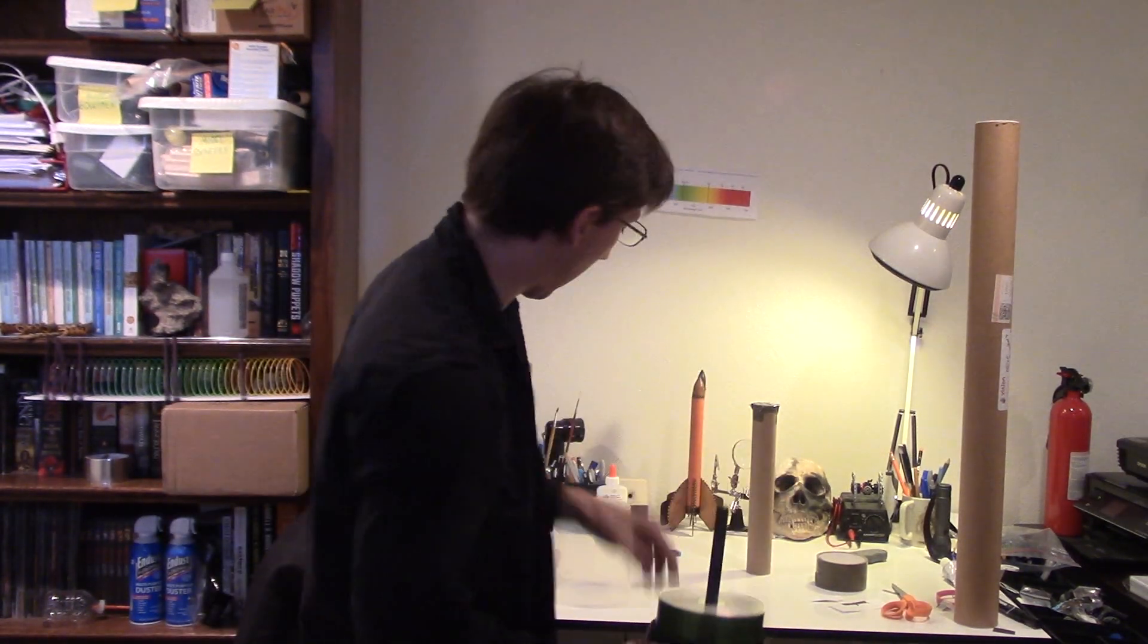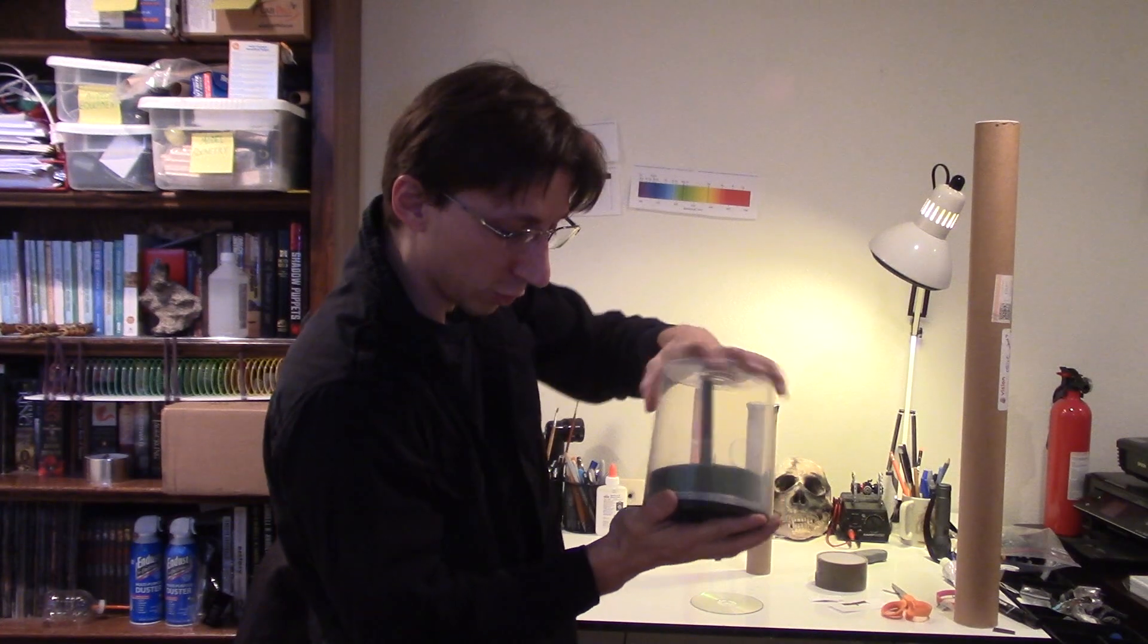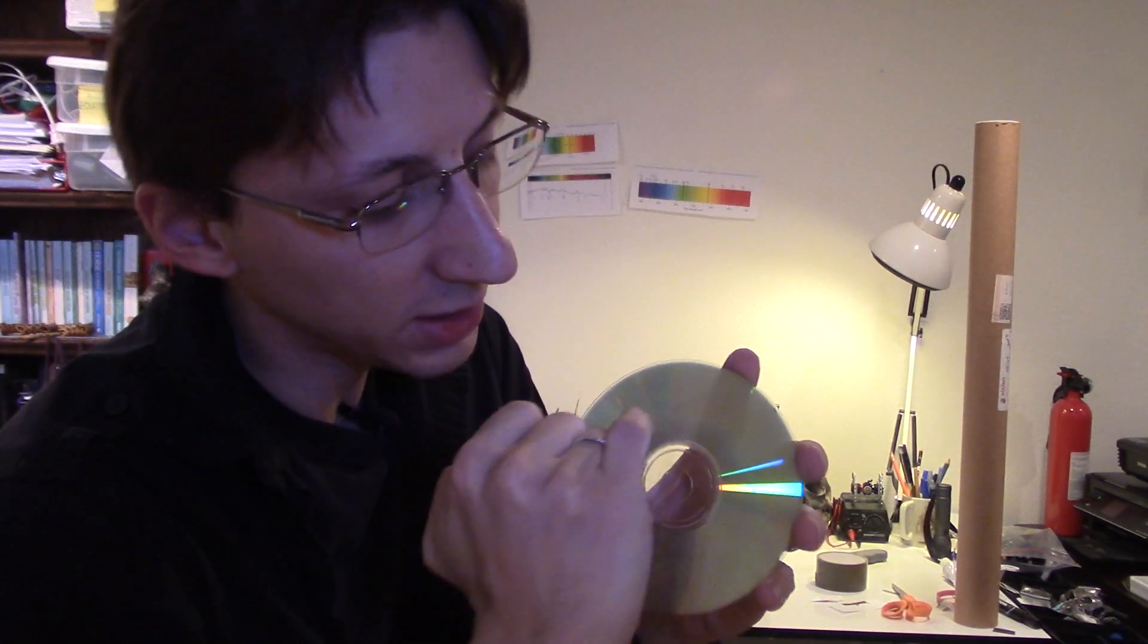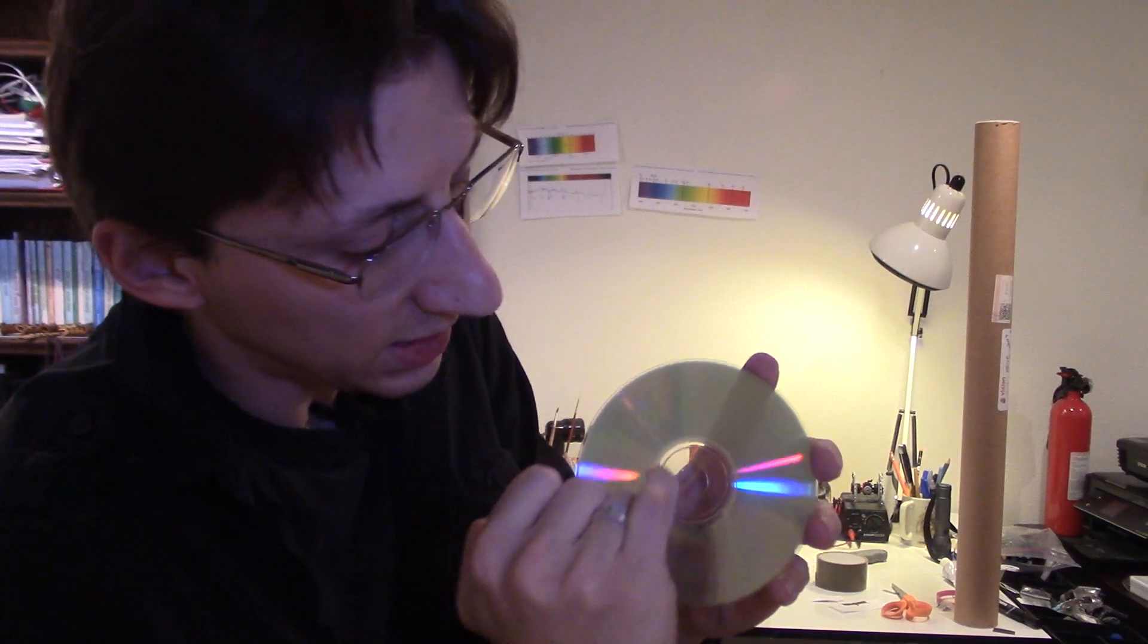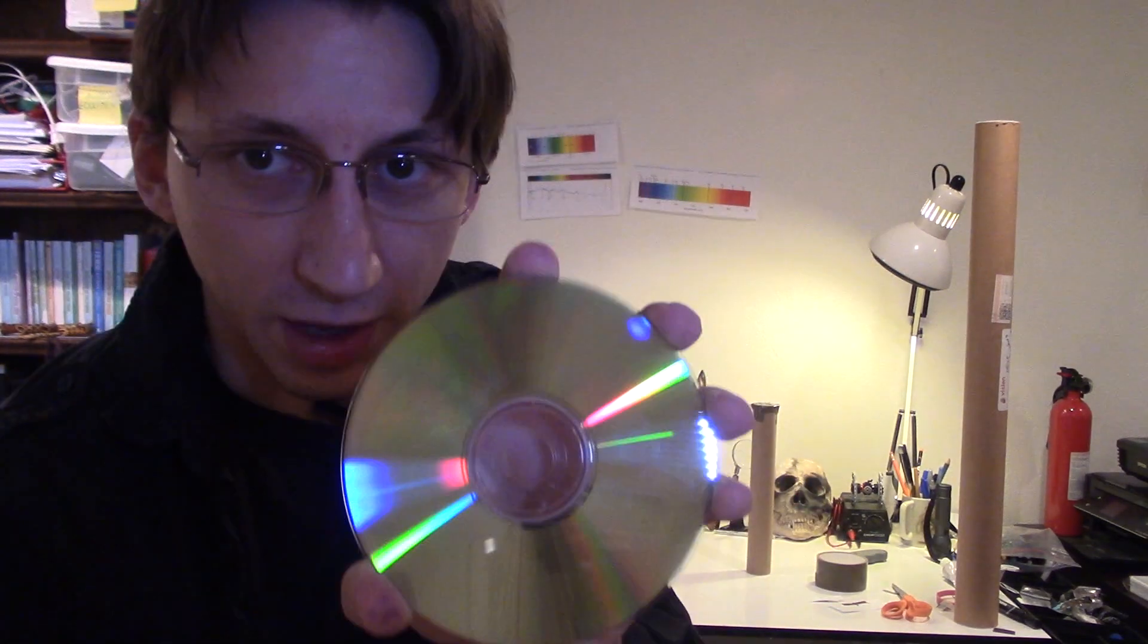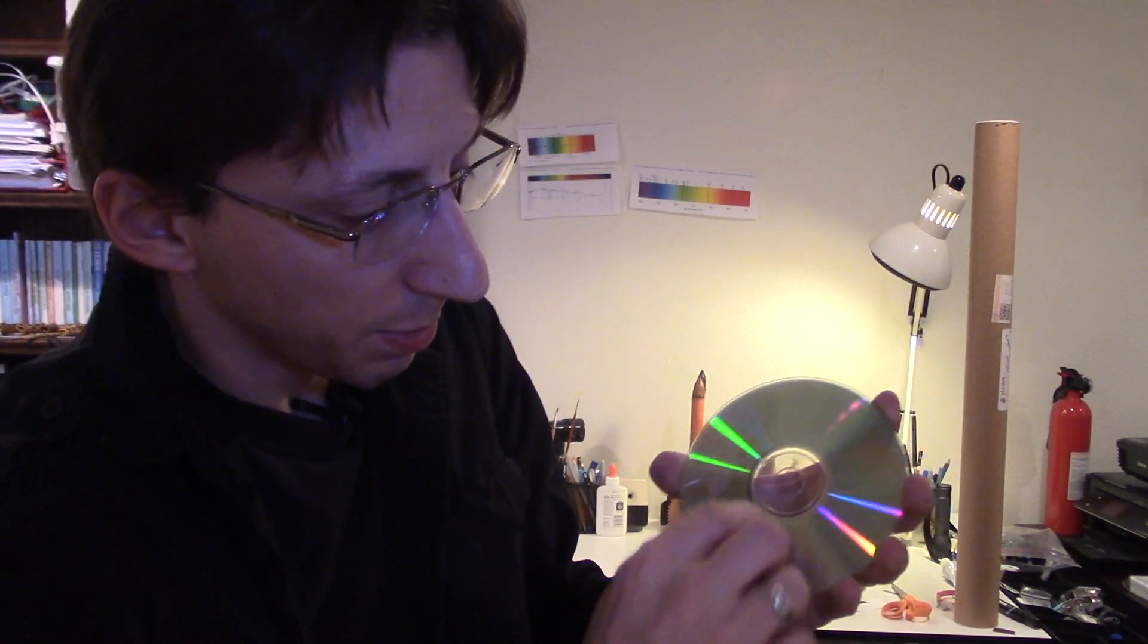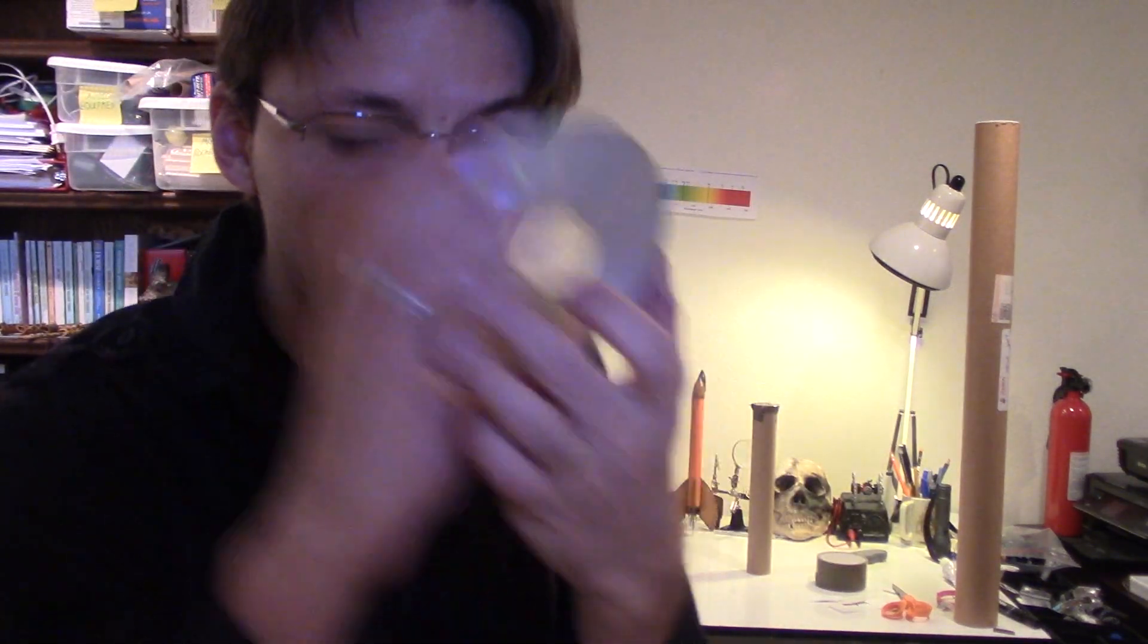I have plenty of these laying around from back when we used to store stuff on CDs. The way that the data was encoded on here meant that there are lots and lots of tiny bumps and ridges, pits and lands, in the CD itself. And you can already see the bright rainbow colors come from the pits and lands. But we want to be able to look through it.